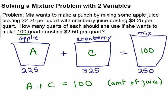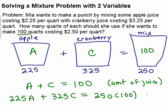I want the cost of the apple juice I use plus the cost of the cranberry juice I use to equal the total cost of the mixture. The cost of the apple juice is 225 cents per quart times A quarts, so that's 225A. The cost of the cranberry juice is 325 per quart times C quarts, so 325C. We want 225A plus 325C to equal 250 times 100, since we have 100 quarts at 250 cents per quart. This equation is talking about the cost.